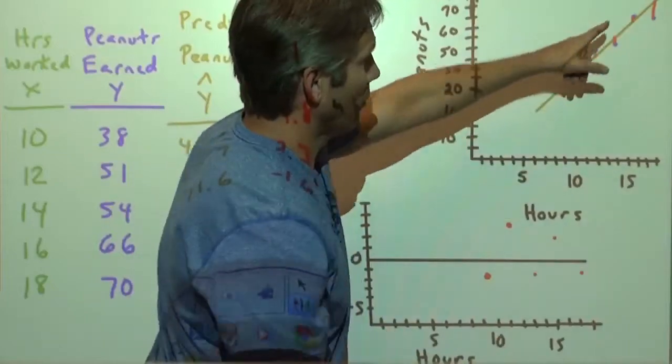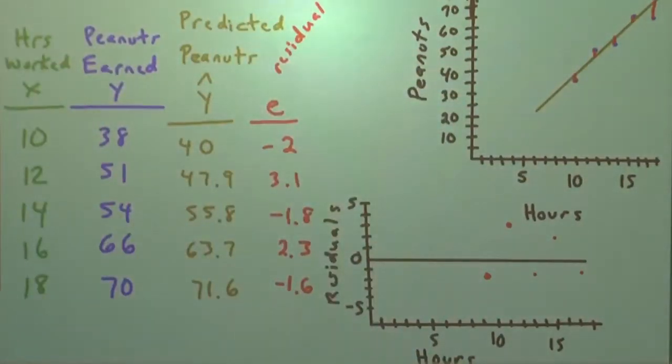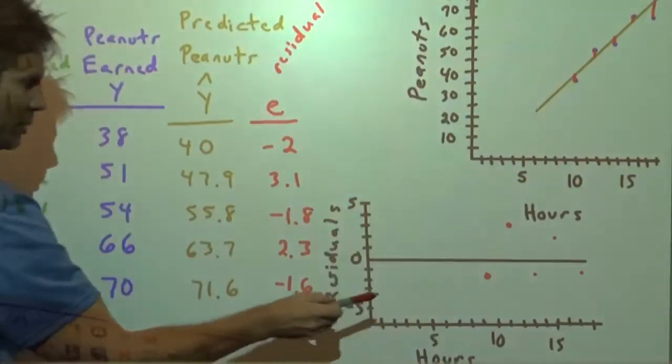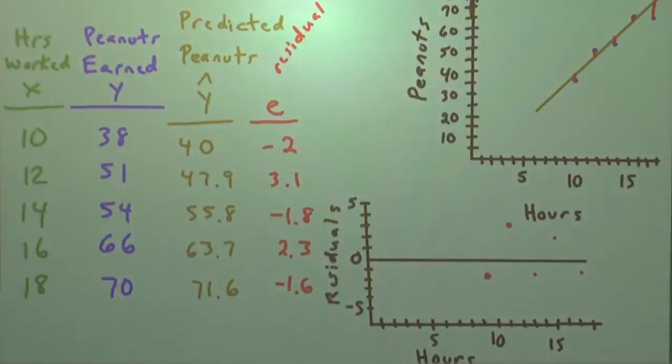It's how far are the points away from the line. Scatter plot, residual plot. X-axis is the same, but the Y is different.